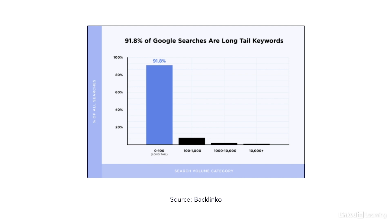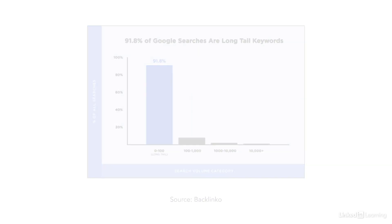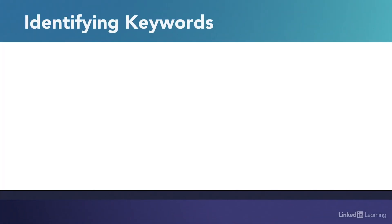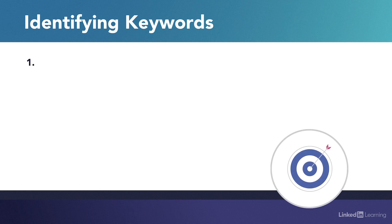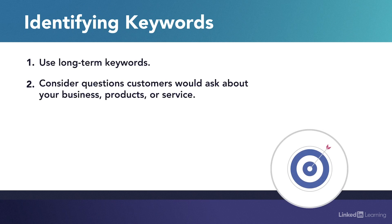And 91% of Google searches are long tail keywords. When you plan your keyword strategy, consider what you have to offer and then think about the questions your customers would ask and the topics they want to learn about. Those things make great jumping off points for your keyword research.